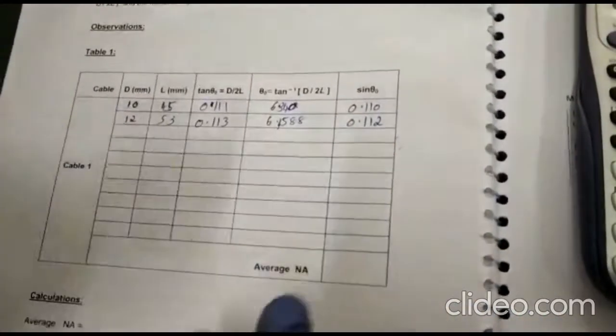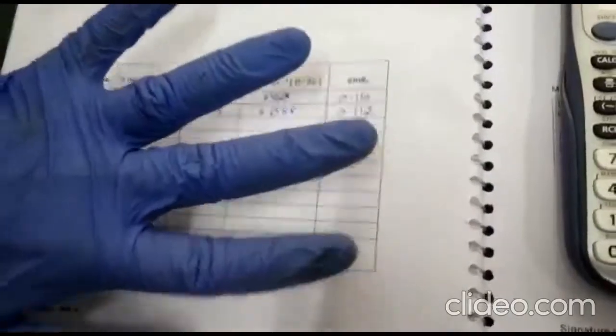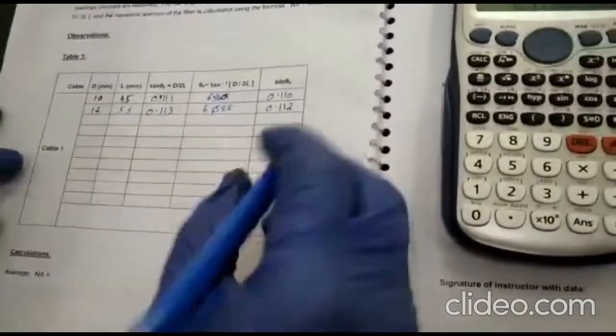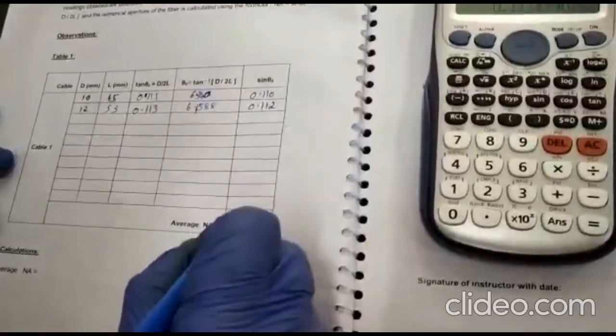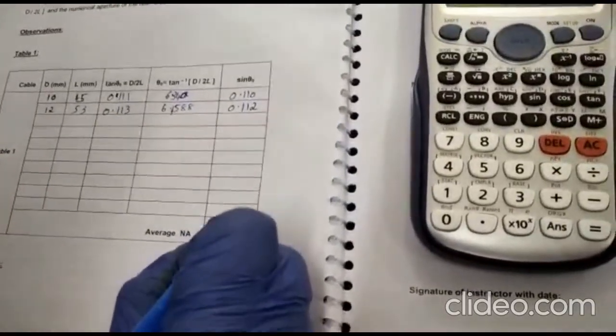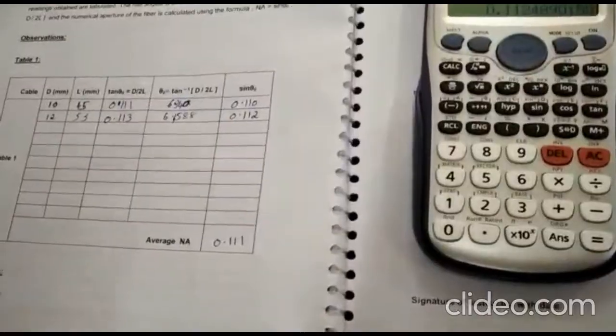And after that you will find an average of all the readings. So the average, I am showing only for 2, but you will have to do minimum 5. Okay. 5 minimum readings you have to take. So average of these two will be 0.111.